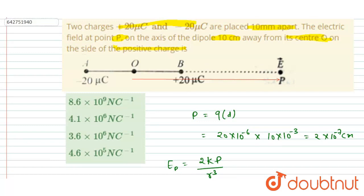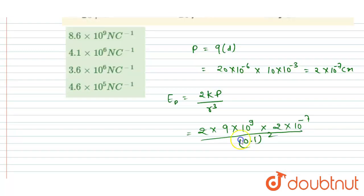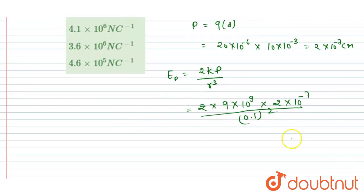whole cubed. So if you will solve this you will get the value of electric field at point P. So after solving you will get E_P is equals to 3.6 into 10 to the power 6 newton per coulomb as the answer.